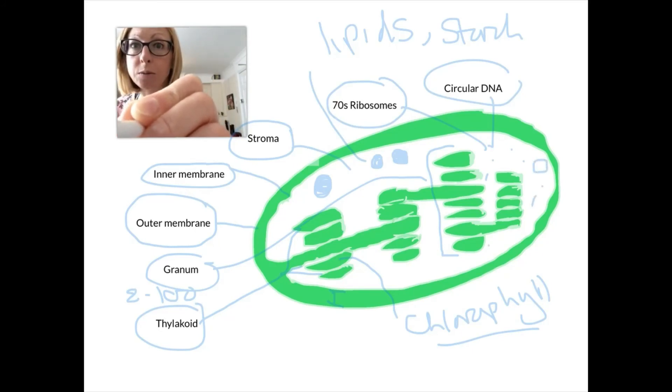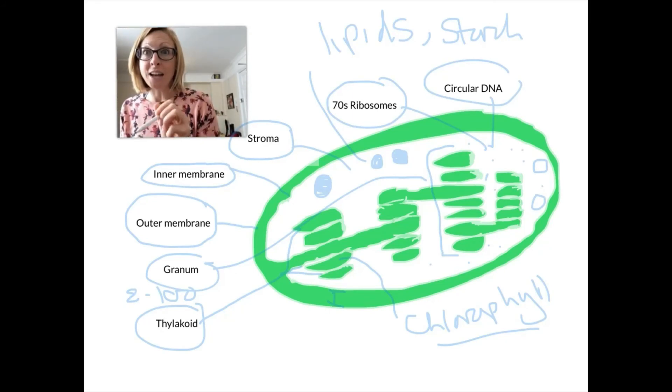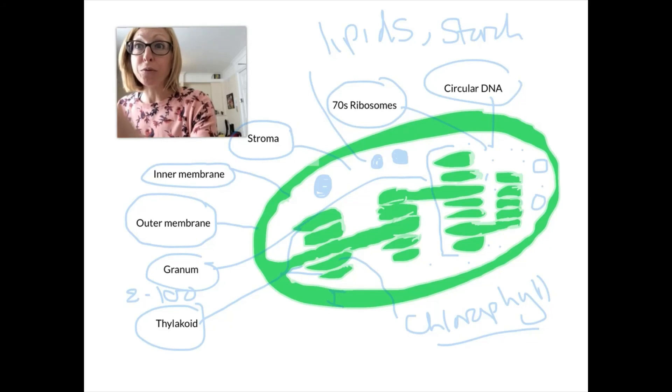We've got some little circular loops of DNA and some 70S ribosomes, which means that the chloroplast can make its own proteins for photosynthesis. The DNA contained in the chloroplast will have the code for the amino acids that are needed to make the right proteins for photosynthesis to occur. These will be enzymes. With the help of the ribosomes, they're able to be produced inside the chloroplast.